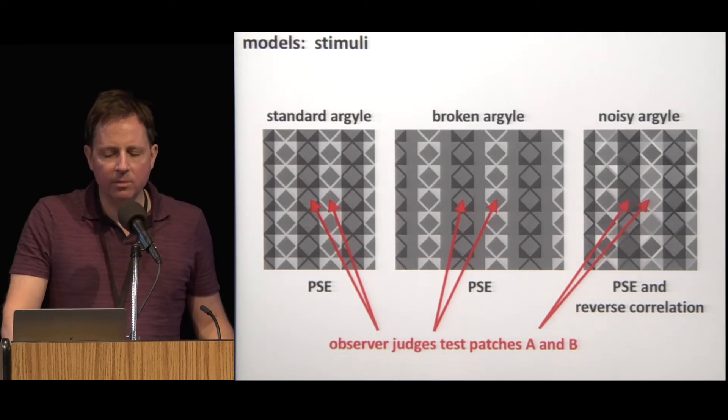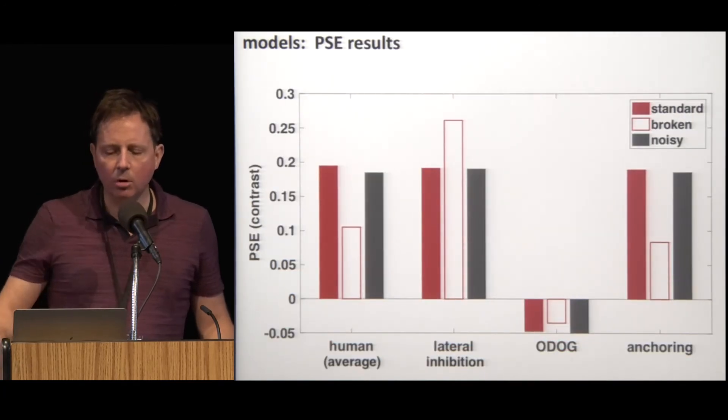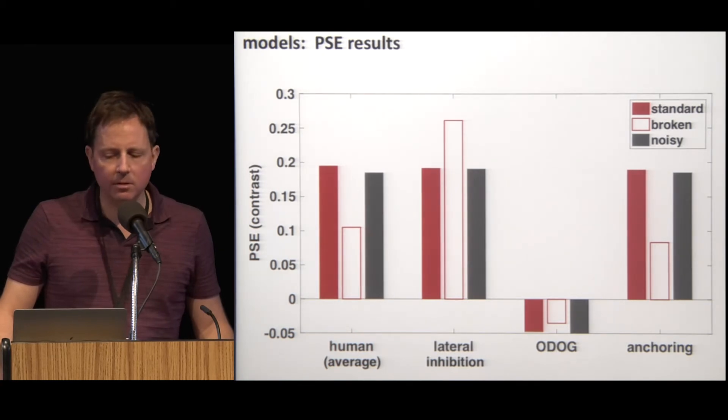Just like with human observers, we ran these three models in an experiment where we measured PSEs and reverse-correlation maps in three conditions. Here are the model's PSEs along with the average human PSEs for comparison. Our main goal was to find the classification image for the models, but the PSEs actually turned out to be very informative as well because we ran the models in all conditions of a real experiment and we measured their performance using the same metric we used for human observers, namely PSEs.